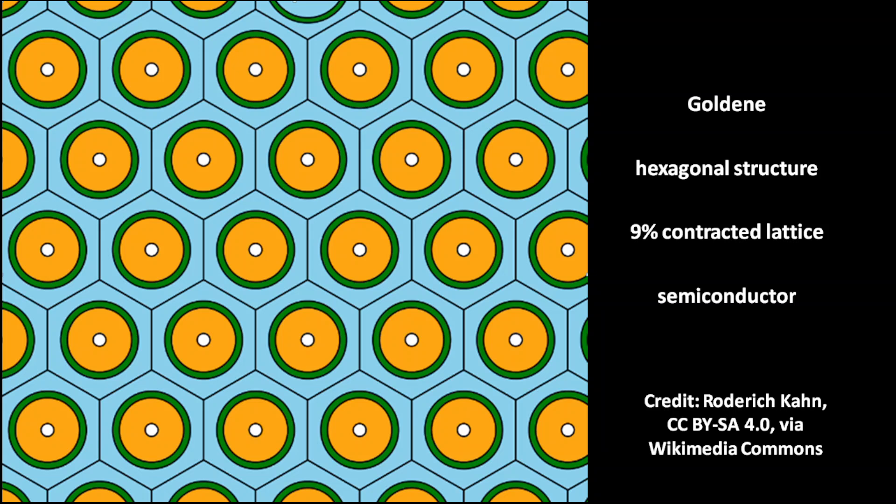Goldene has a hexagonal structure and is not flat, but slightly rippled. Its lattice is contracted by 9% compared to bulk gold. The goldene 4f binding energy is increased by around 0.88 eV compared to bulk gold.